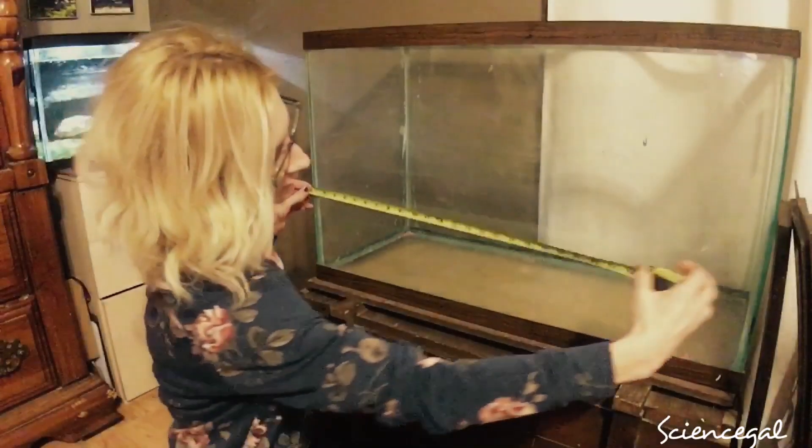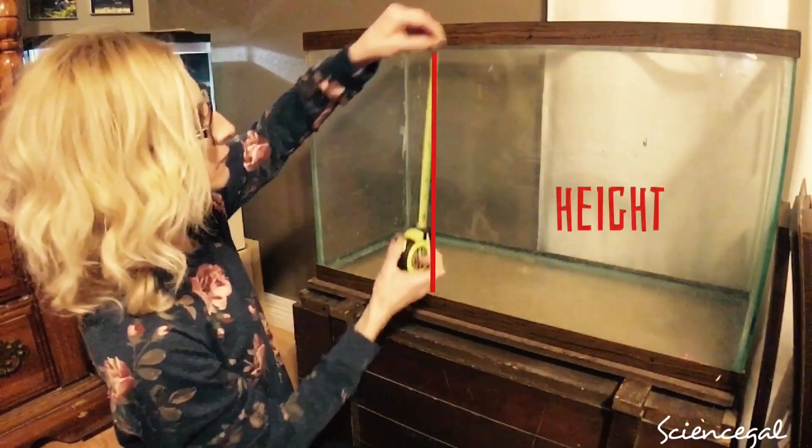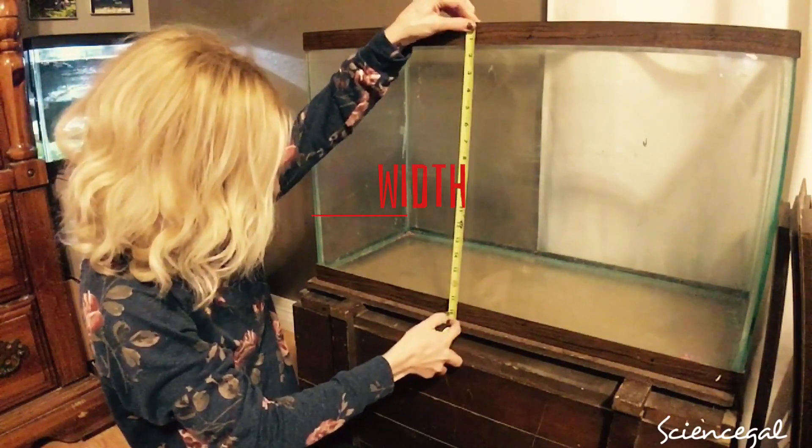In this step you're simply going to measure the length, the height, and lastly the width of your aquarium. After you get that measured, you're going to want to grab a piece of paper or a calculator and I'll show you this equation.